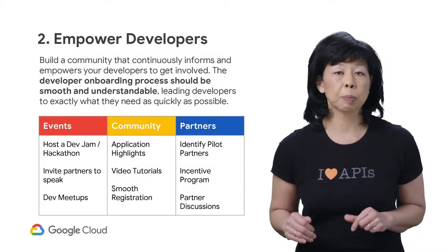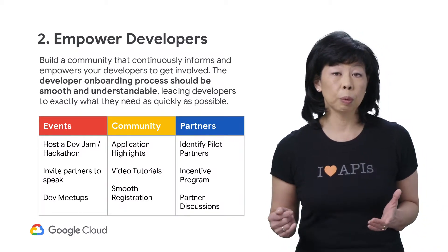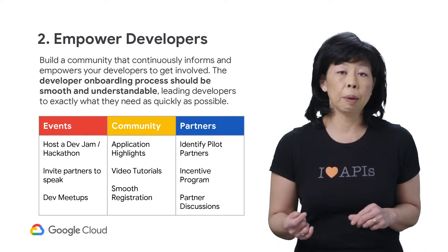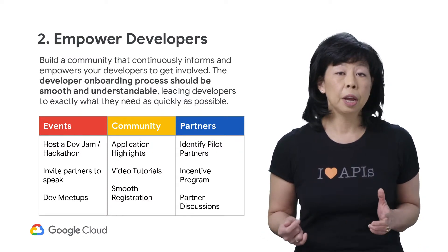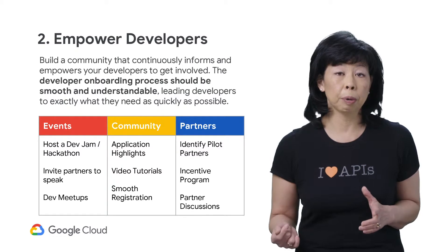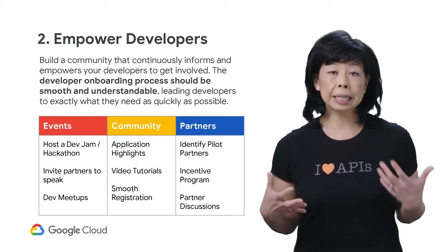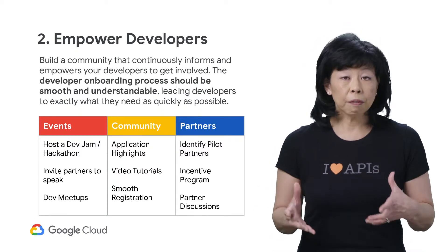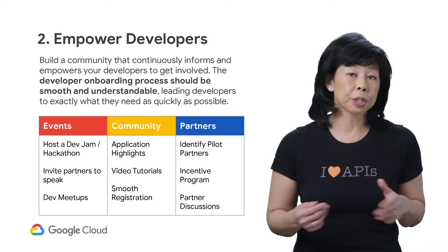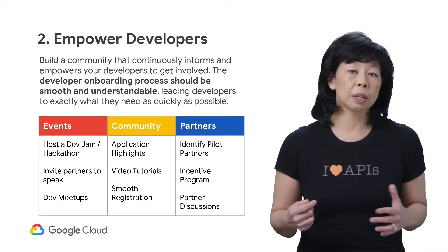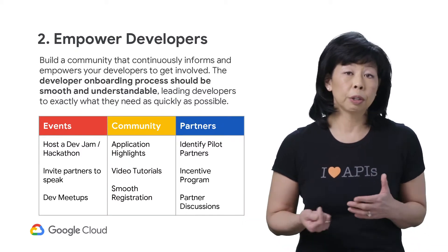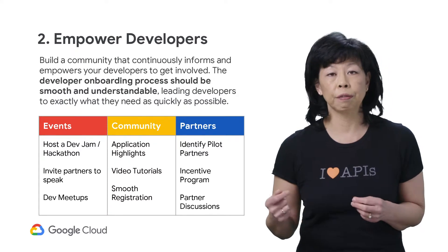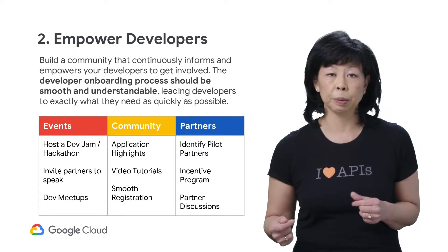You empower developers by supplying them with what they need. For example, hosting a Dev Jam or Hackathon helps your developers get into your API program and easily access your APIs. Developing incentive programs for partners to get involved, and tutorials showing how easy your developer portal is to use can greatly encourage developers to participate.